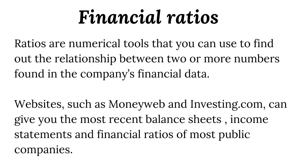Next, we have financial ratios. These ratios are numerical tools that you can use to find out the relationship between two or more numbers found in the company's financial data. Websites such as MoneyWeb, ShareData, Investing.com, and Yahoo Finance can give you the most recent balance sheets, income statements, and financial ratios of most public companies. We'll discuss a few in the following slides.